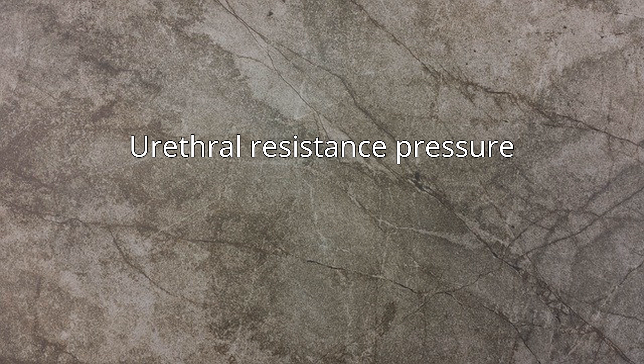Urethral resistance pressure is the pressure existing in the urethra during urination or other conditions, generated by the detrusor muscle. It forces urine into and through the urethra in order for micturition. In the urethra, part of that pressure is converted to dynamic forward pressure, which helps voiding happen.